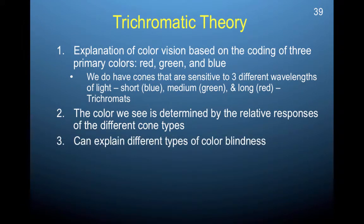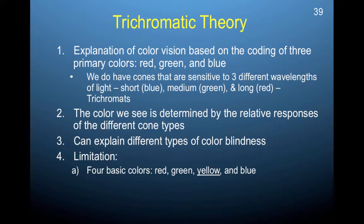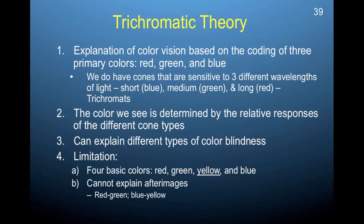This can explain different types of colorblindness, which supports the trichromatic theory, but a limitation is that there are four primary colors — red, yellow, blue, and green. We need all four of these primary colors to make all the colors we perceive. If we don't have a yellow cone, then how does trichromatic theory account for this? It has trouble with the four basic colors. Another limitation is that it cannot explain afterimages. If you stare at a bright color long enough and then remove it from the screen, what was red can activate a blue aftercolor, what was red would activate a green aftercolor, and what was blue would activate a yellow aftercolor. The trichromatic theory cannot explain this aftereffect.